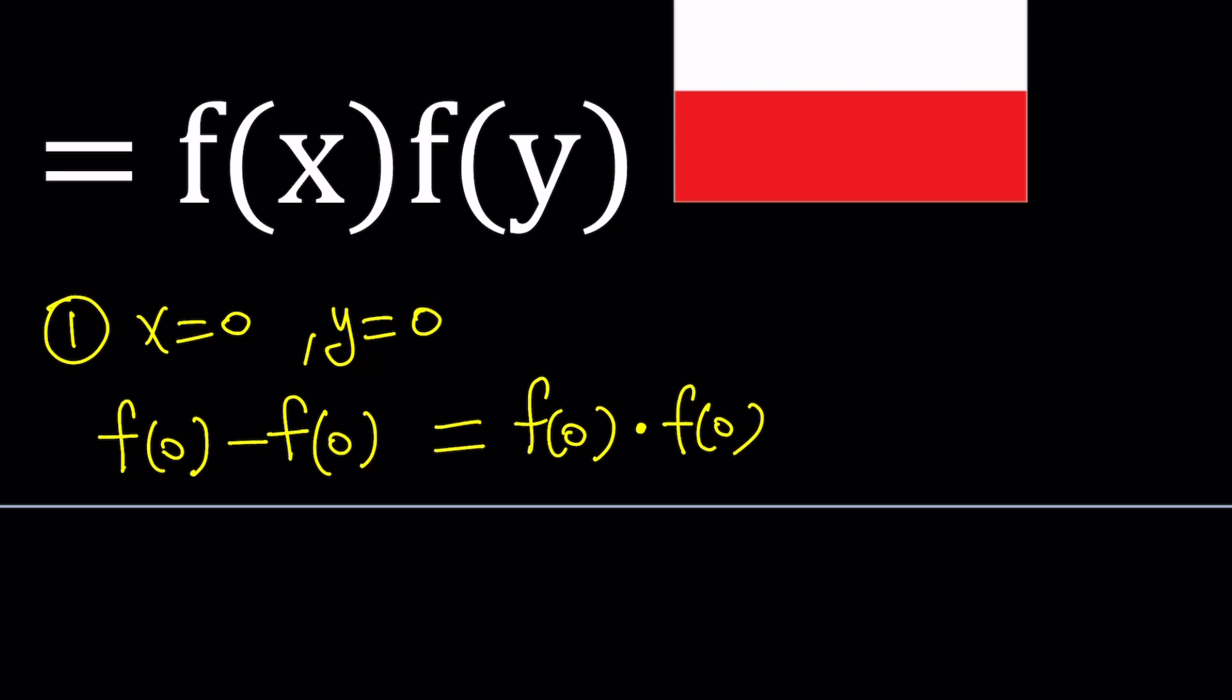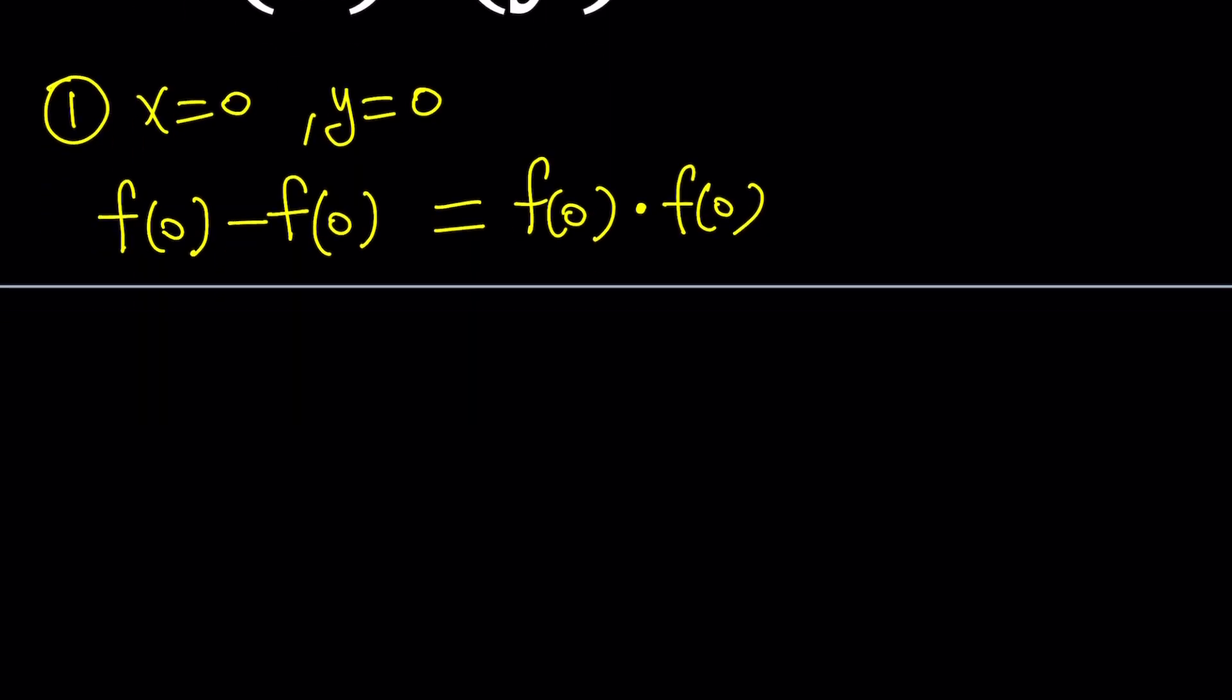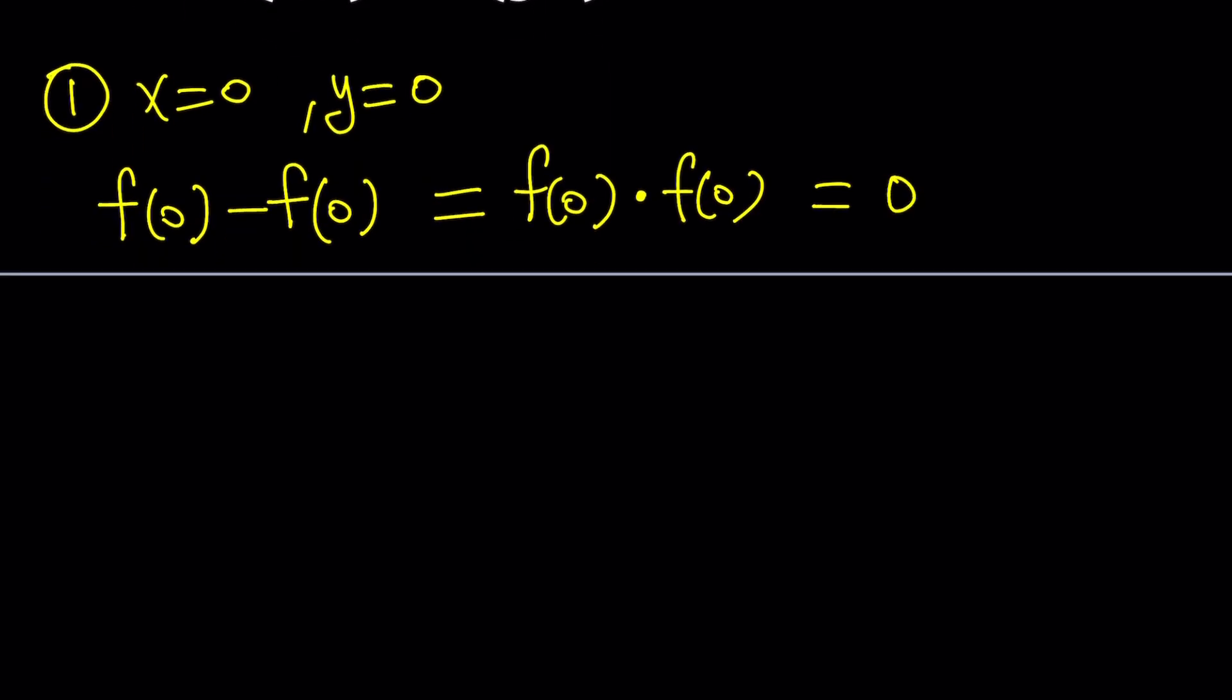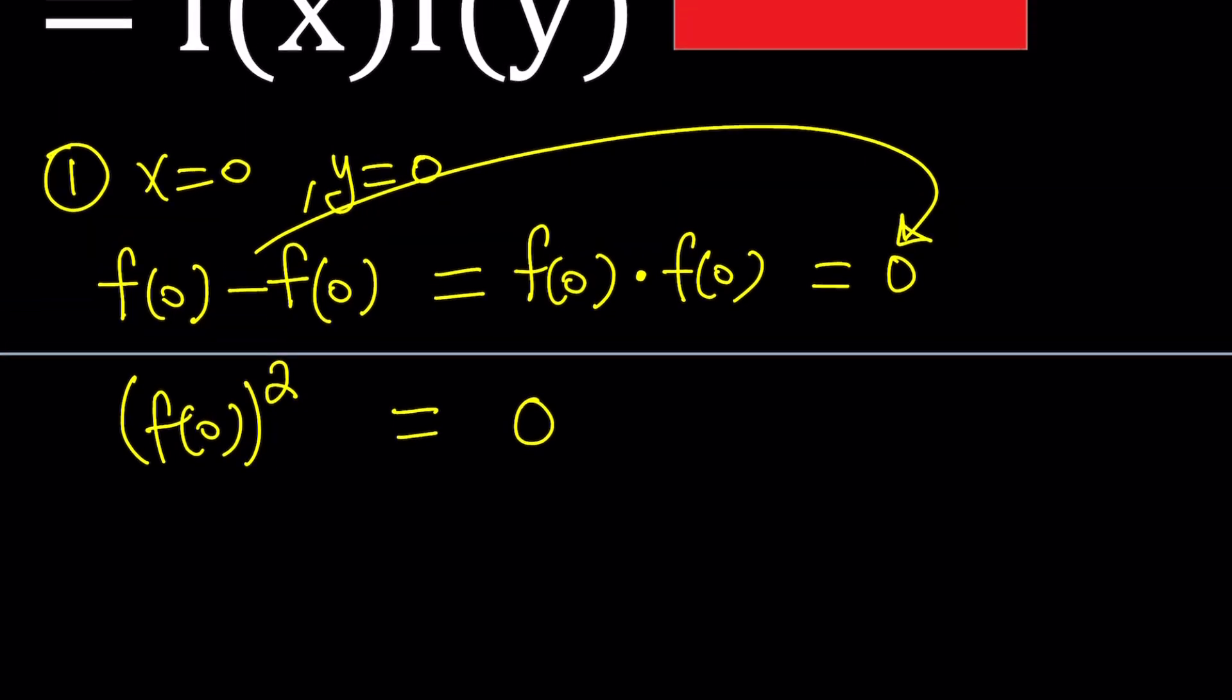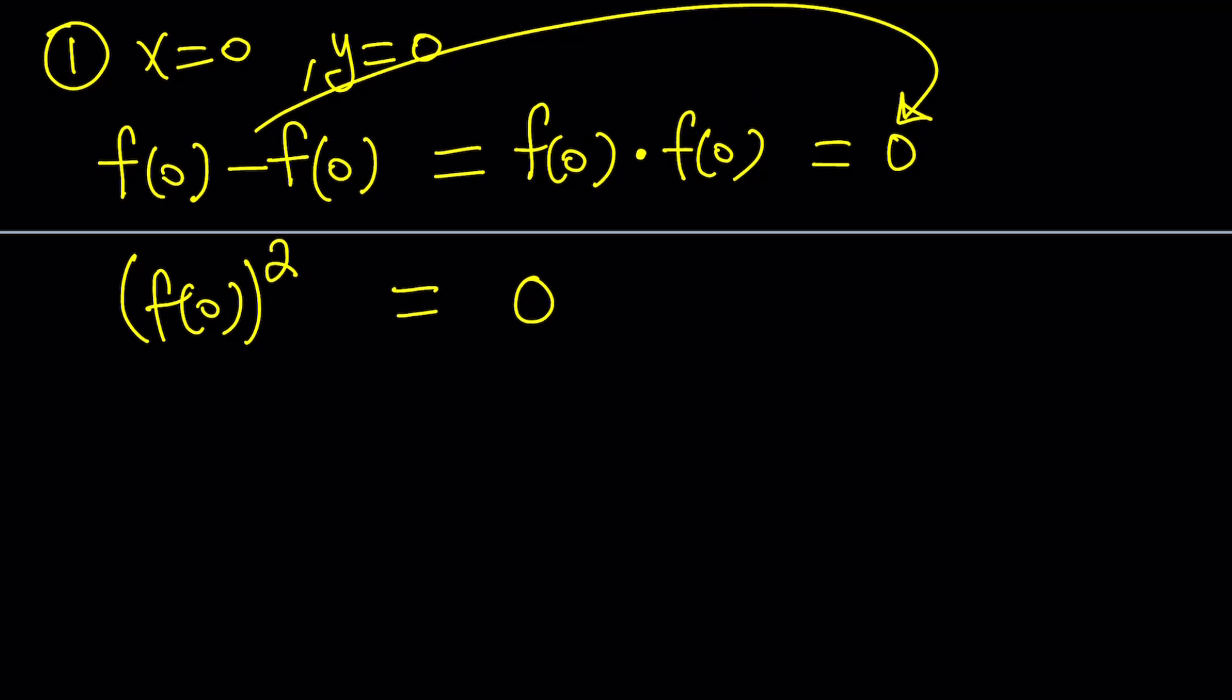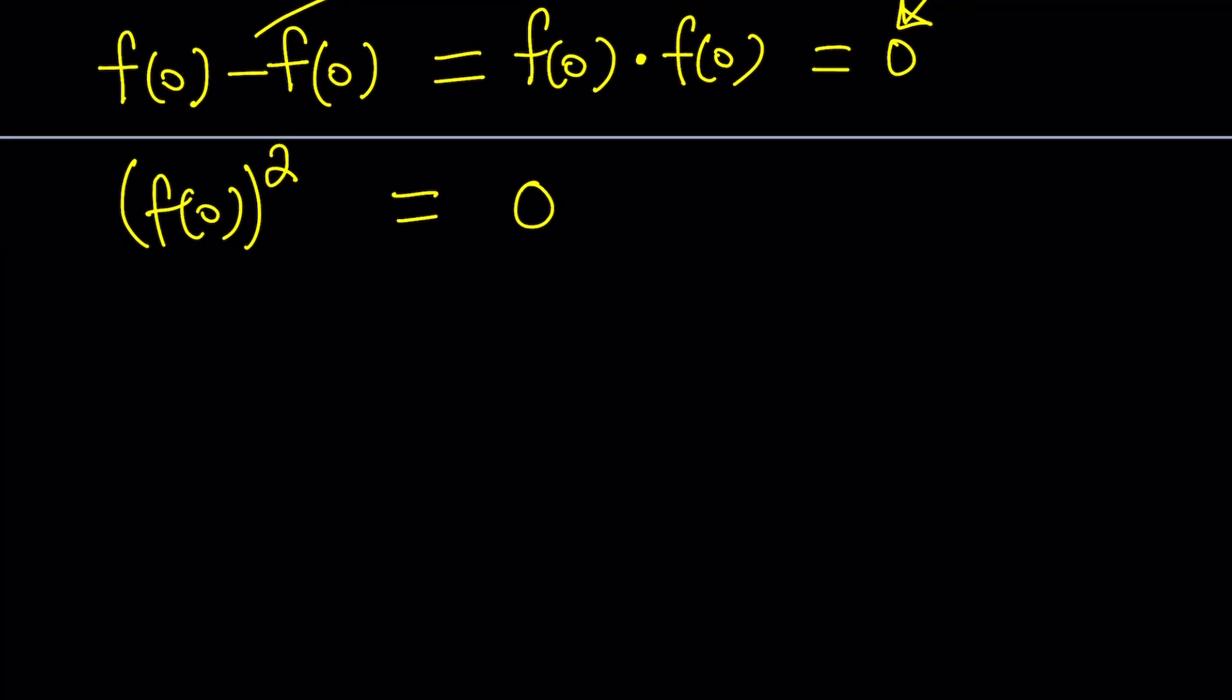Now, what is f of 0 minus f of 0? If you subtract anything from itself, you get 0. So this is equal to 0. In other words, f of 0 squared, because it's multiplied by itself, is equal to 0. And that 0 comes from here, by the way. So we got something interesting. f of 0 squared. Something squared is 0. So what number squared is 0? The answer is 0. So from here, we get f of 0 equals 0.